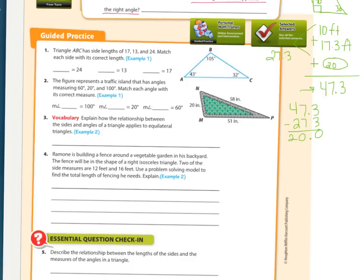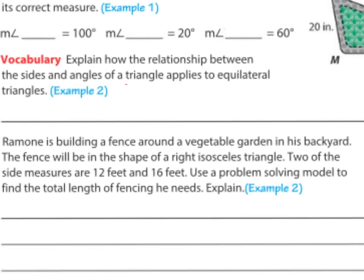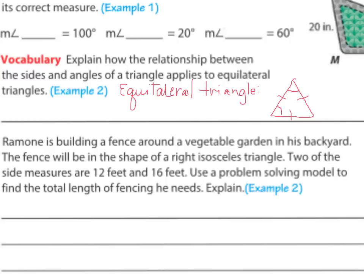The vocabulary for this section: an equilateral triangle is when all three sides are the same length and all three angles are equal to each other. Since all angles add up to 180, and 180 divided by 3 is 60, each angle is 60 degrees. The lengths could be anything, as long as all three are the same.